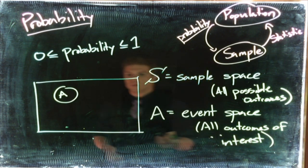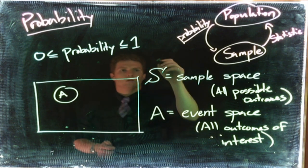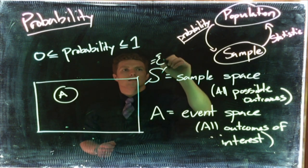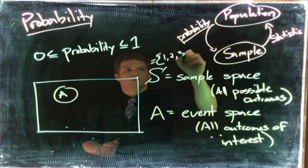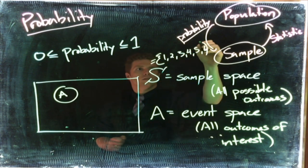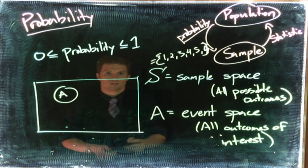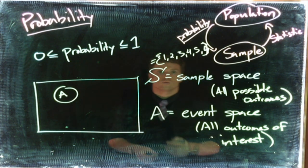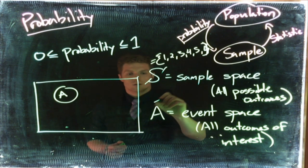So if we roll a dice, we can imagine that our sample space would be defined as {1, 2, 3, 4, 5, 6}—that would be our sample space. Maybe we're only interested in rolling an even number, so for our event space that would be {2, 4, 6}.